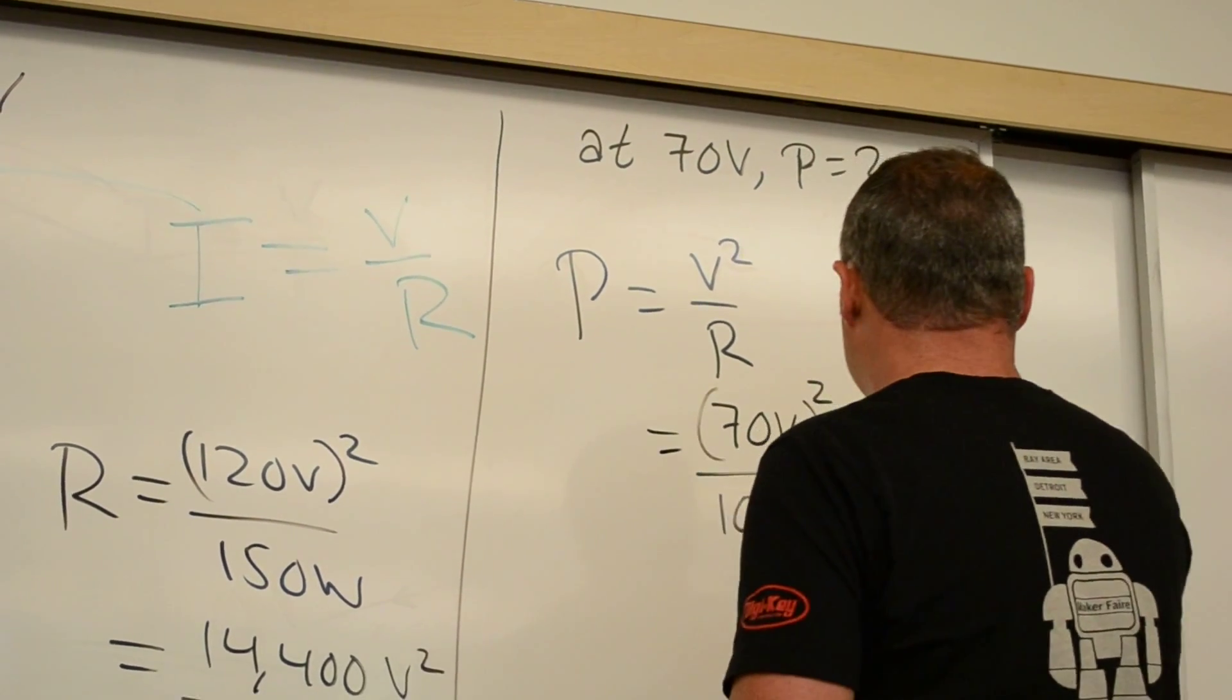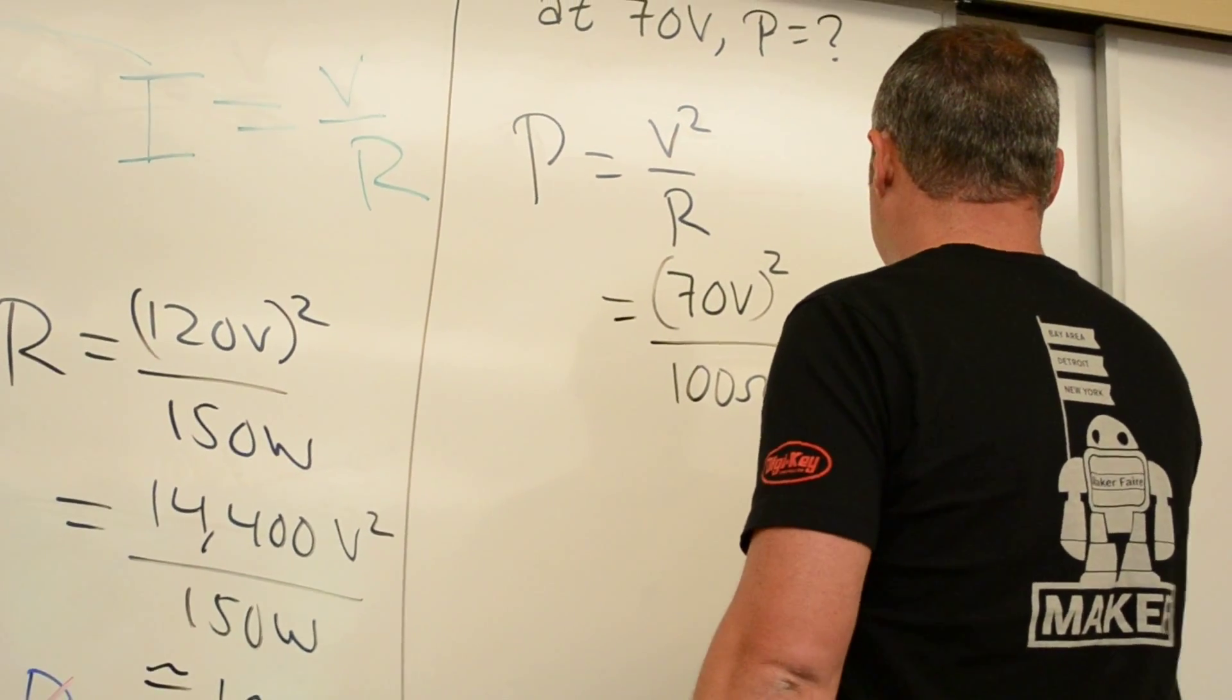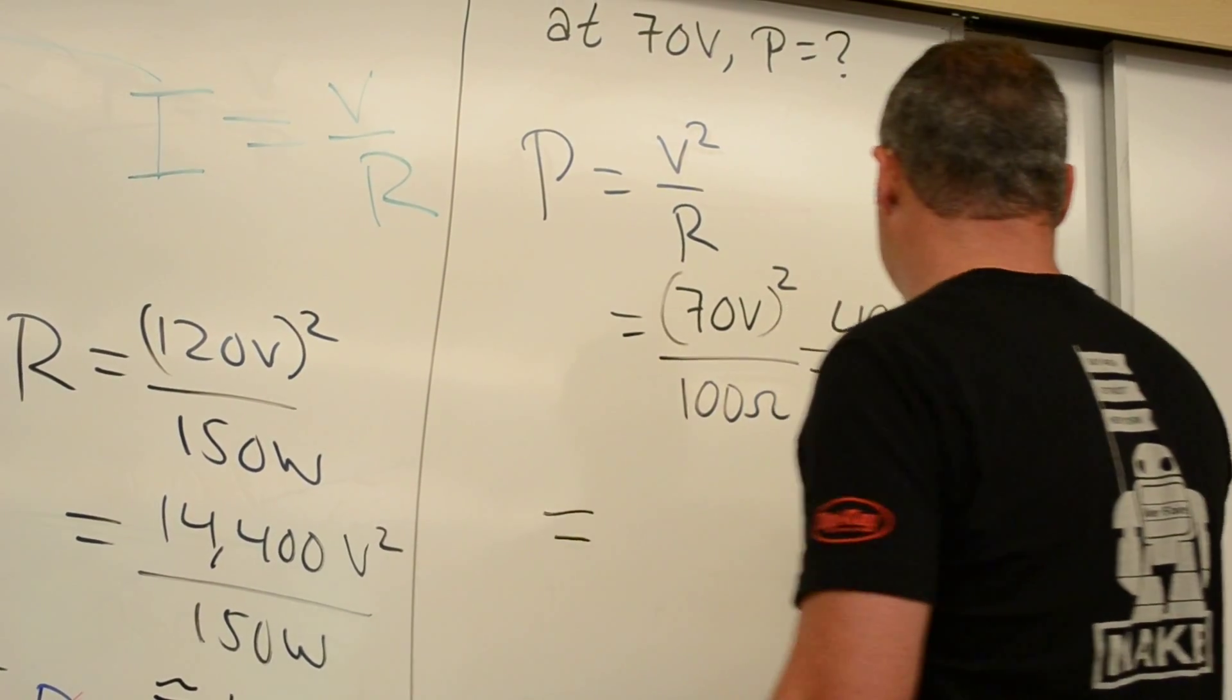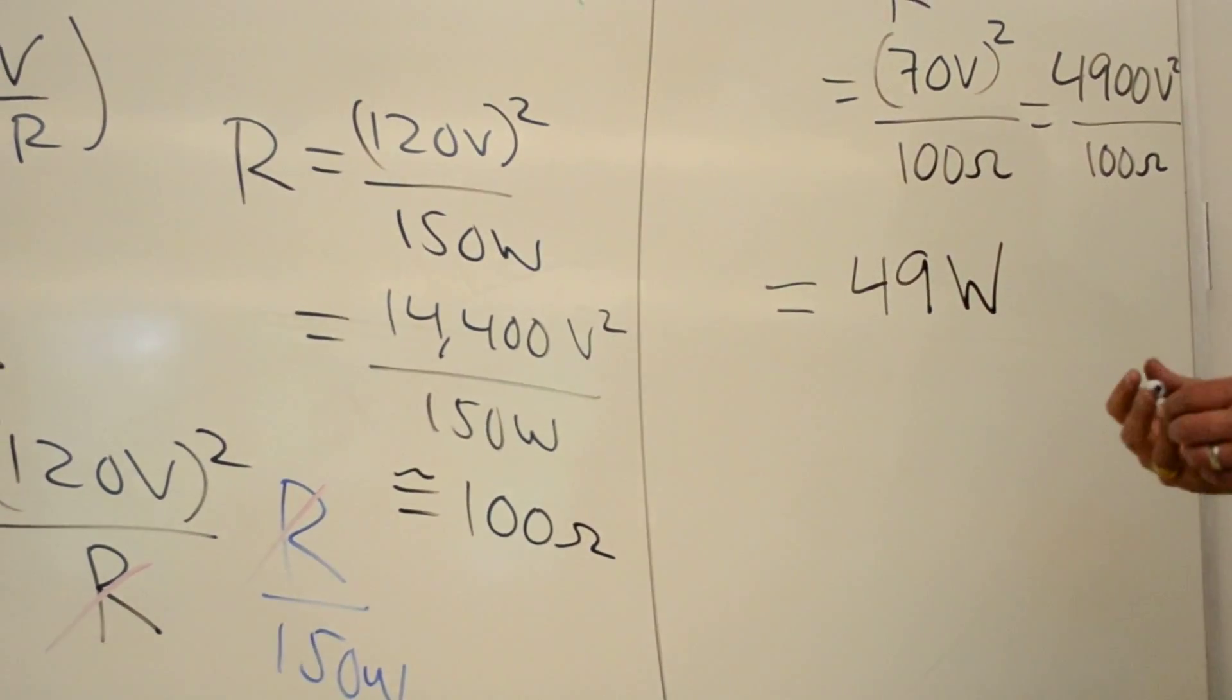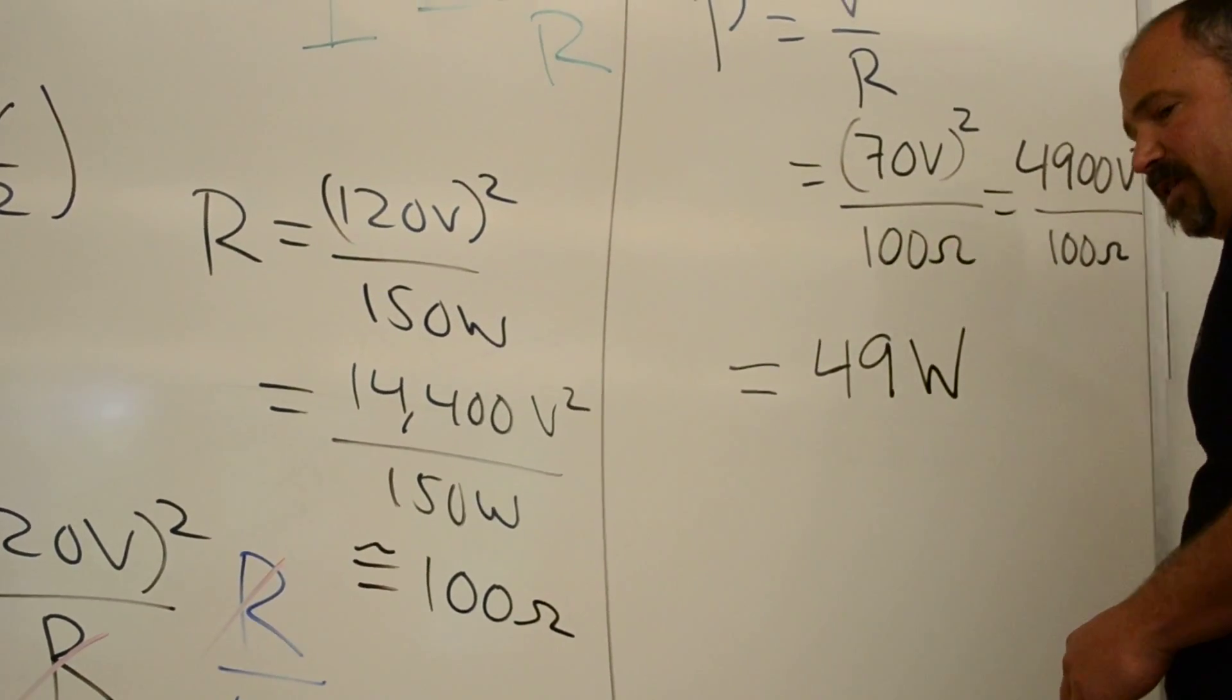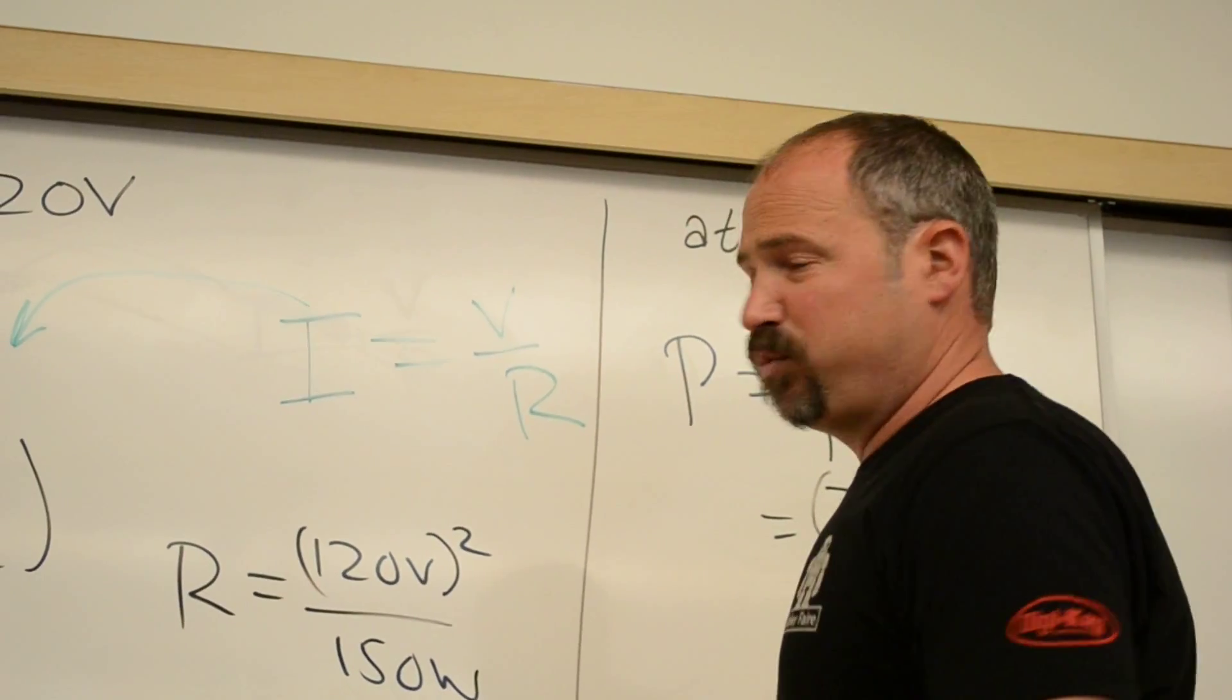And 70 squared is 4,900 volts squared over 100 ohms. Volt squared over ohms gives you watts. And that gives us 49 watts. So when I run it at 70 volts, it's 49 watts, not 150 watts.